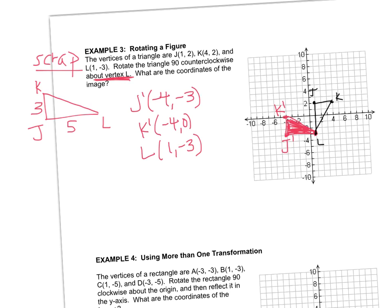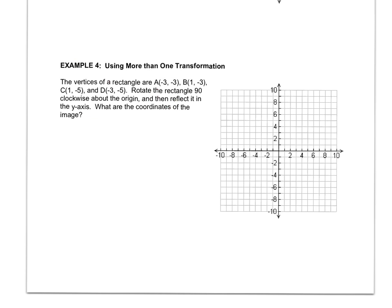Most of the rotating we're going to do will be like example 2, rotating around the origin. Example 3 — rotating around a vertex — is something you'll do more in high school, but it's an introduction since we're talking about rotations. We'll focus heavily on rotating around the origin. Example 4 wants you to put it all together and do multiple transformations in one question. Ideally I'd like you to try this one on your own, but you're welcome to follow along.